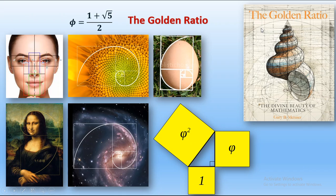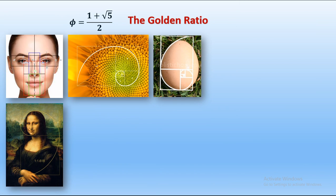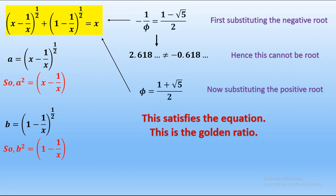The famous golden ratio book written by Gary B. Meissner is titled 'The Divine Beauty of Mathematics.' It is called divine because the golden ratio is found everywhere in nature, from Milky Way galaxies to the shape of an egg. This expression truly has a divine solution, as its answer is the golden ratio.